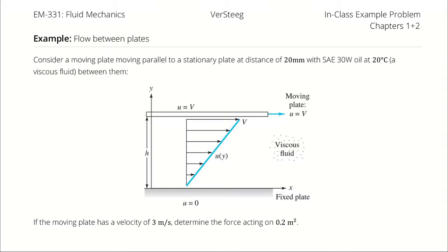Consider a moving plate moving parallel to a stationary plate at a distance of 20 millimeters with SAE 30-weight oil at 20 degrees Celsius, which is a viscous fluid, between them. If the moving plate has a velocity of 3 meters per second, determine the drag force acting on 0.2 square meters.